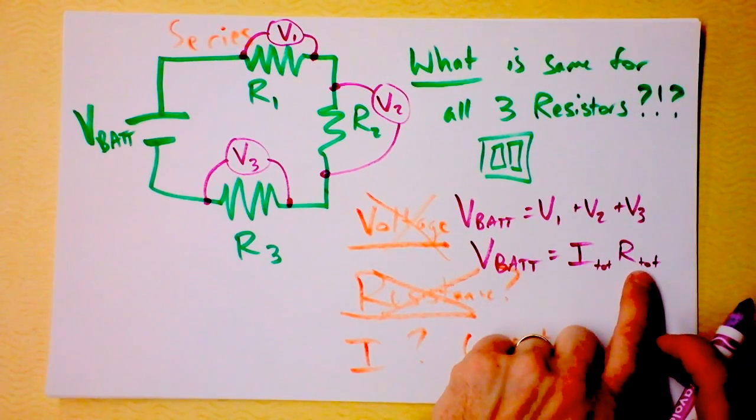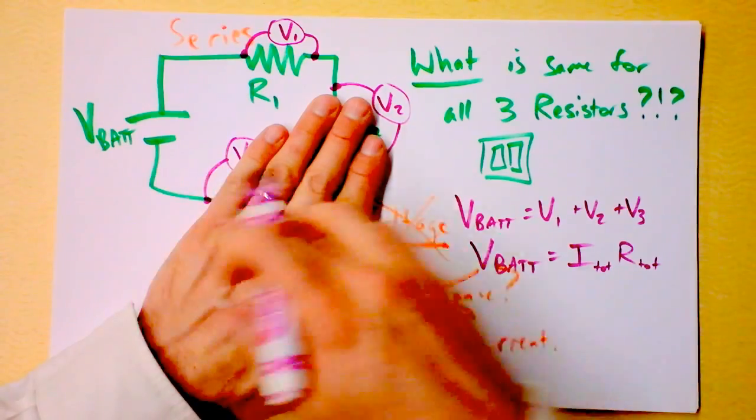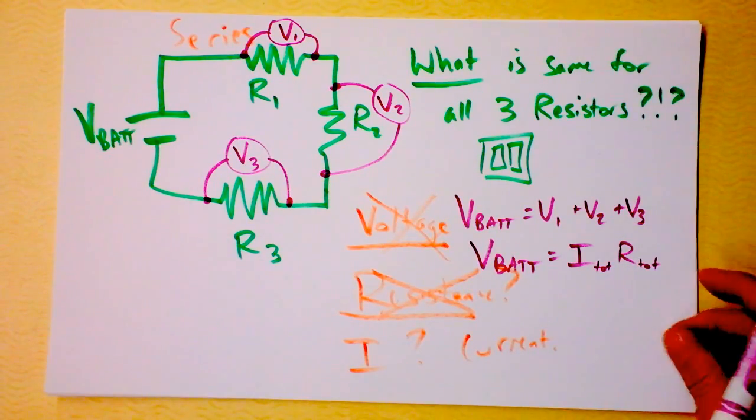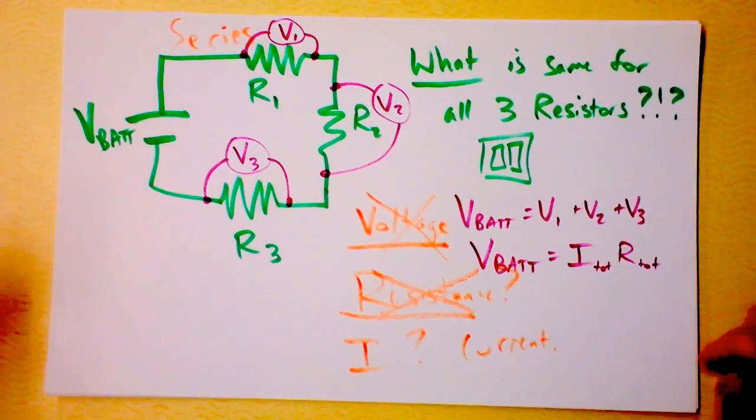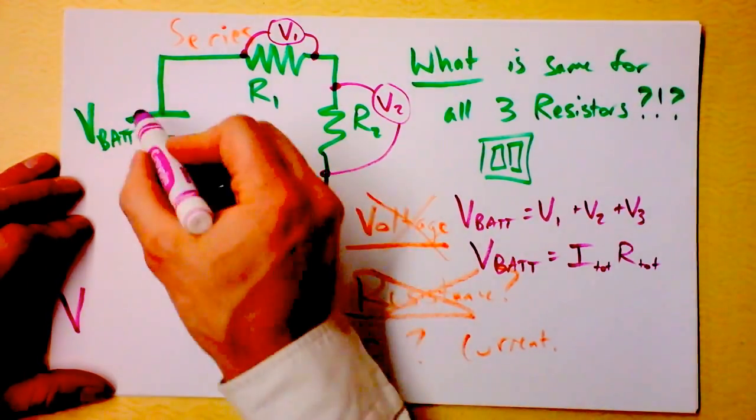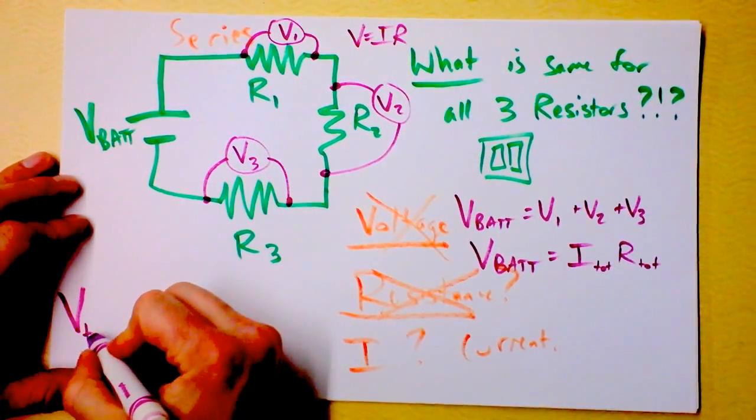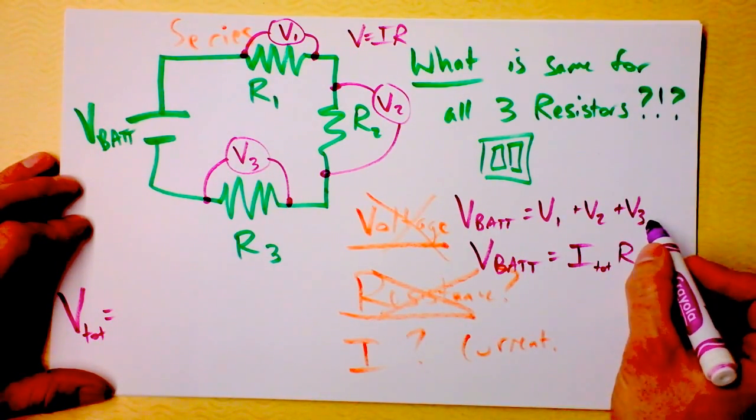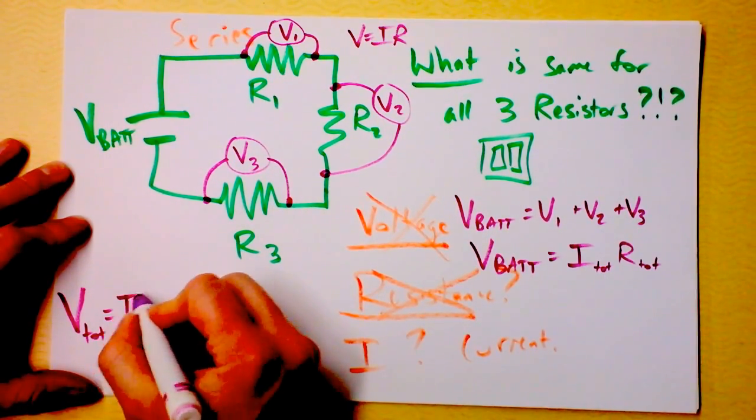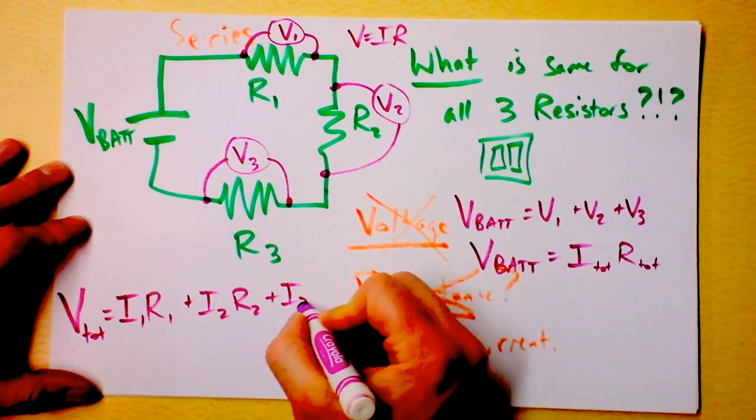and you know also that V battery is equal to I total times resistance total. Some people like to call this the equivalent resistance of the circuit. Now, do you think that the resistance of this circuit is more than if we just had one resistor, or is it less than if we just had one resistor? Of course, the resistance is going to be more. So the total resistance we expect to be more, and I guess what I could do is I could try to figure out what this total resistance is. But you know that the voltage total, well, let's see if we could do the voltage drops across each of these. If each of these resistors obeys V is IR, then we know that voltage total is, well, it's going to be voltage 1 plus voltage 2 plus voltage 3.